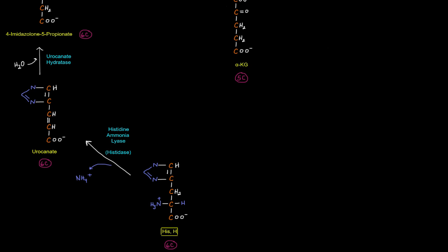The first thing we're going to do is remove this amino group and that hydrogen as an ammonium ion. And we're going to put a double bond between these two carbons right here. And so that's going to be done by histidine ammonioliase, or histidase, to give urocanate, which looks like that.